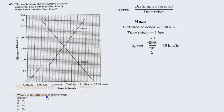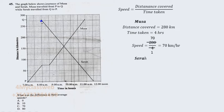Going back to the question: what was the difference in their average speeds? They were traveling at different speeds, so the difference will require subtraction — the one moving faster minus the one moving more slowly. Let us now analyze the speed for Seller.